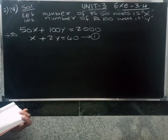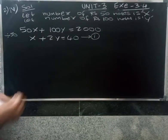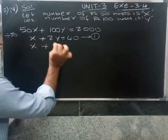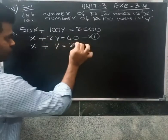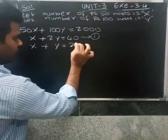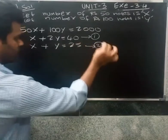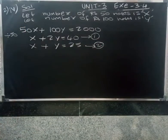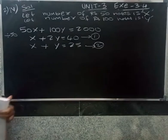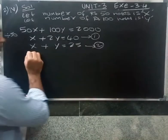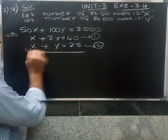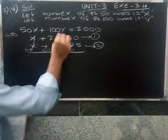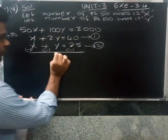The second condition: Meena got 25 notes in total. So the total of 50-rupee notes plus 100-rupee notes equals 25 notes. Now we have two conditions. We use x and y and apply the elimination method — subtracting one equation from the other.